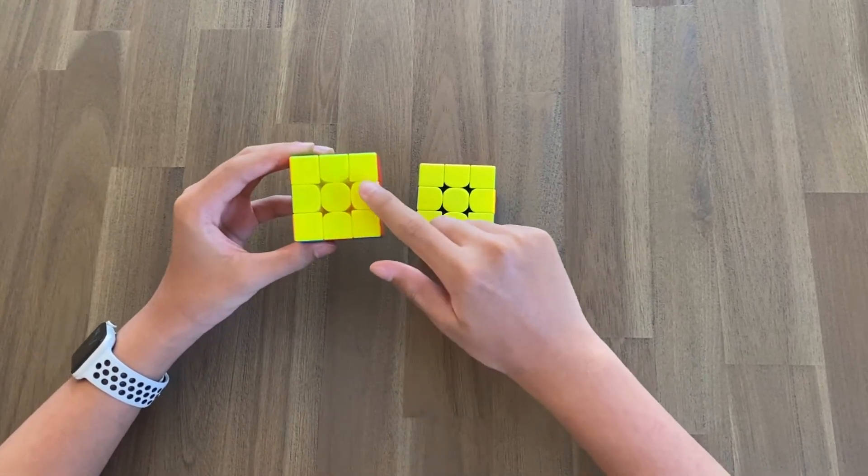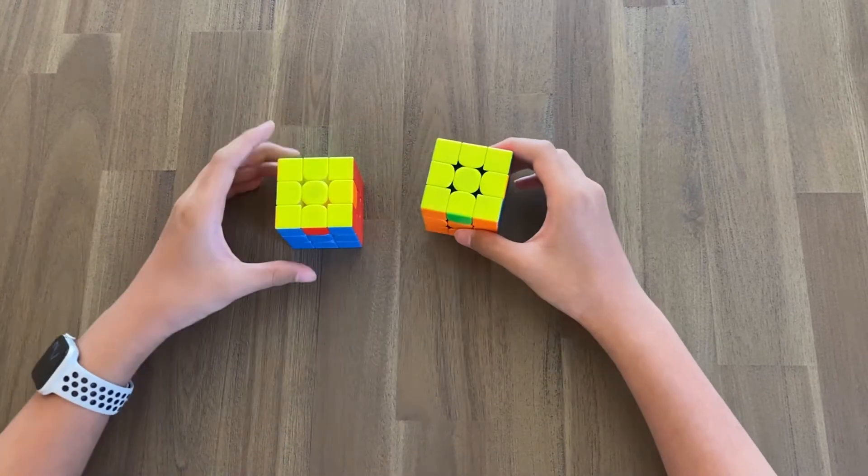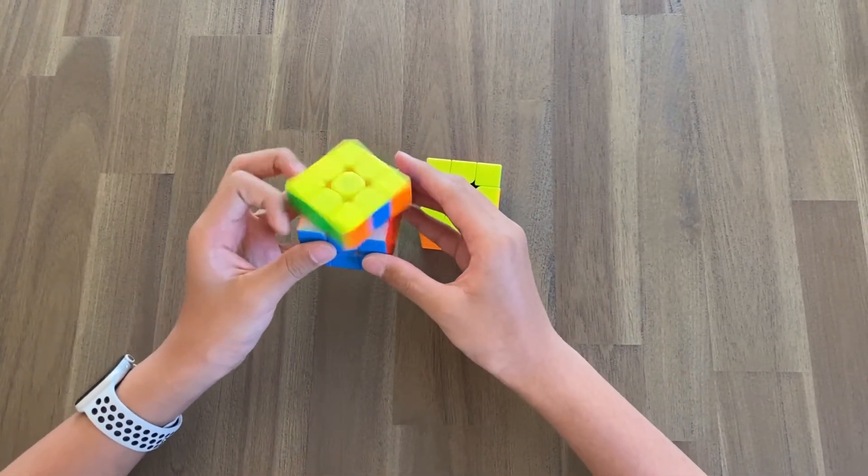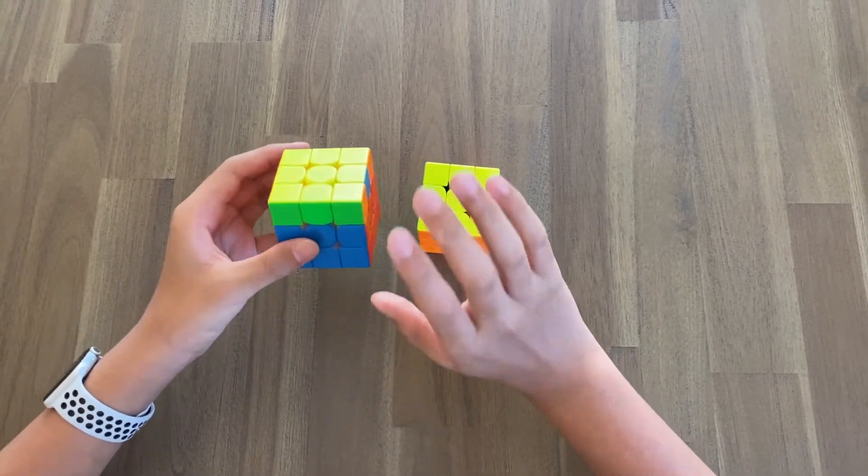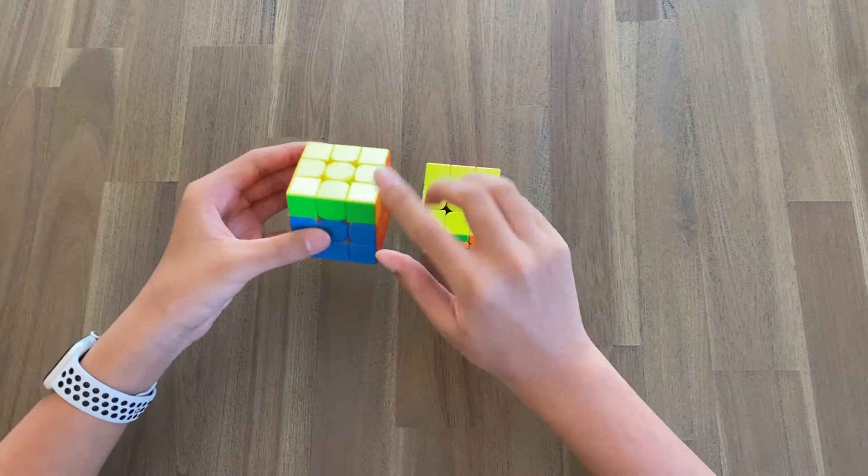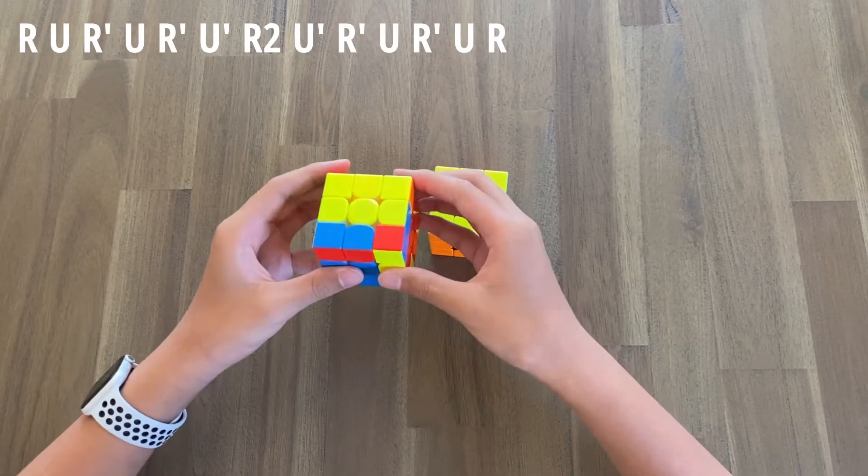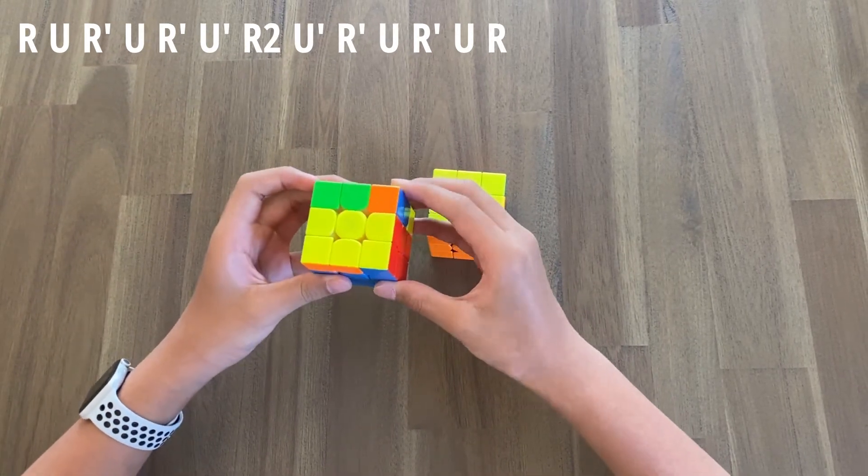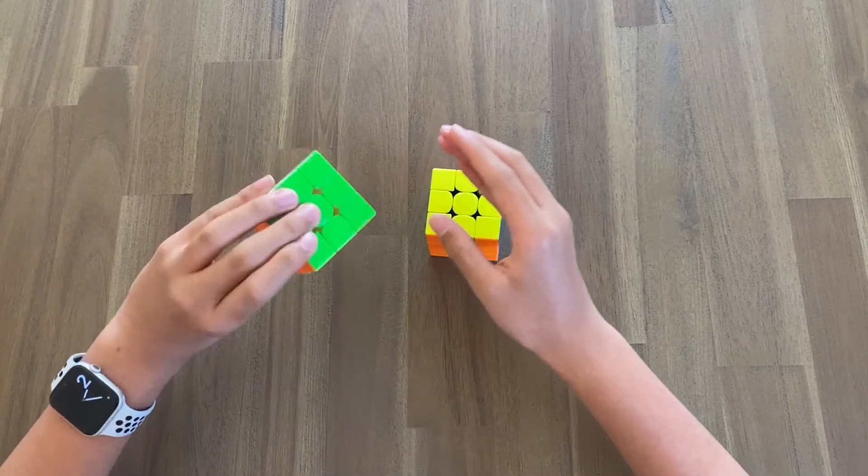This one is the UA perm, which has a counterclockwise cycle. Starting with the UA perm, you want the cycle to be away from you and you want the solved bar towards you. Here's the algorithm. Make sure you drag, and there we have it.